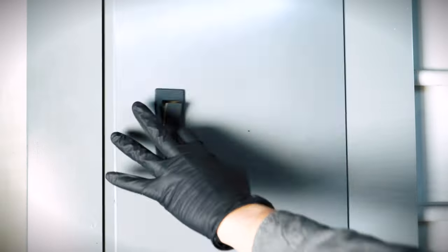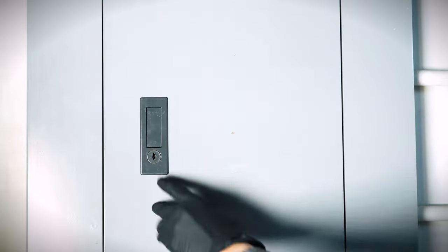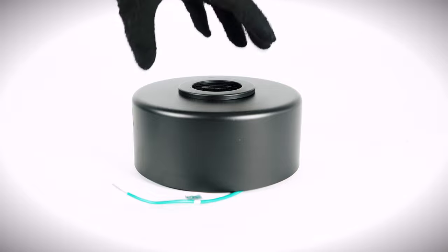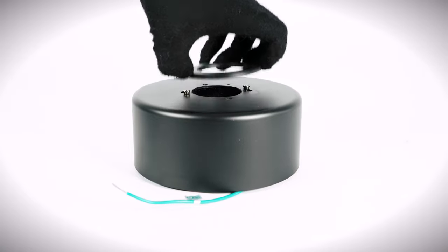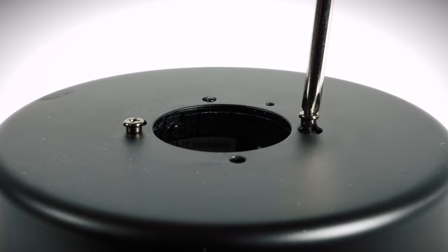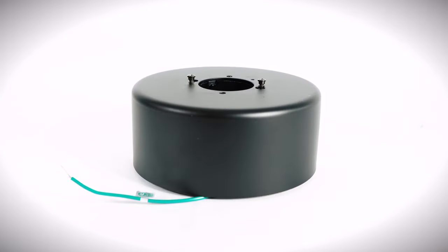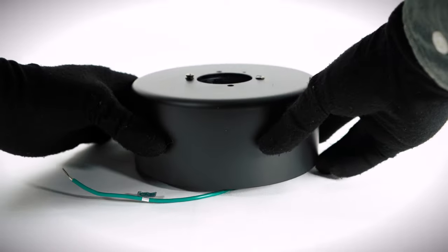Begin by turning power off at the breaker. Prepare the canopy assembly by twisting and removing the canopy bottom cover. Loosen both hanger bracket screws. Twist and lift the canopy to remove the hanger bracket.